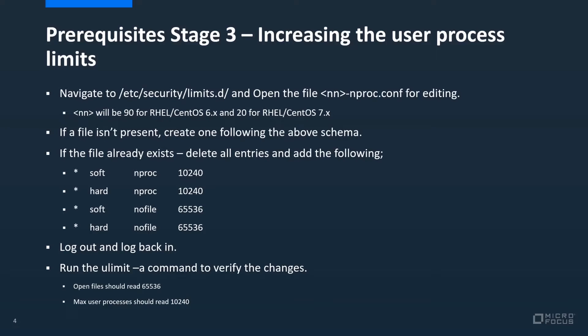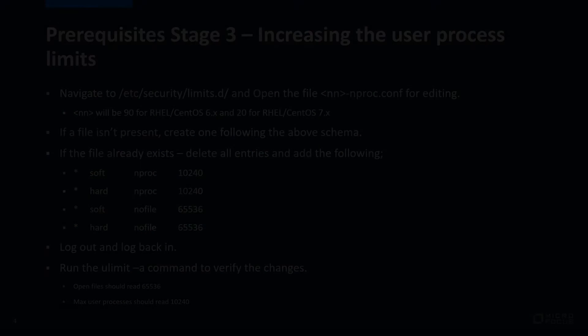Then you can run the ulimit -a command to verify the changes. The two lines you're looking for are open files, which should read 65536, and max user processes, which should read 10240. Now we'll jump to the demo environment and run through this live to show you how it would work in a production environment.